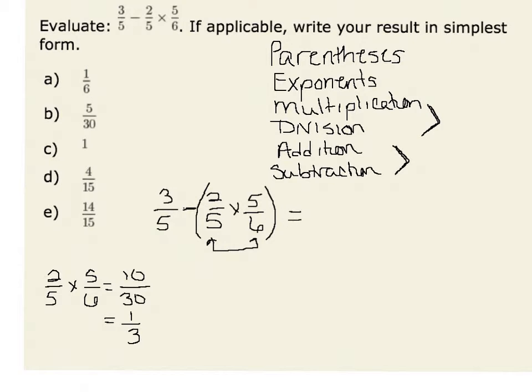Therefore, our numerical expression is equivalent to 3/5 minus 1/3. Now, in order to subtract these two fractions, we must find the common denominator. The common denominator between 5 and 3 would be 15.